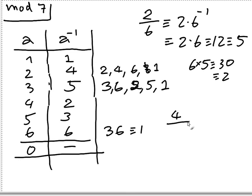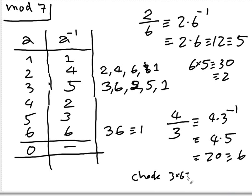Or you can try 4 over 3, that's 4 times the inverse of 3. That's 5, so 4 times 5, that's 20, that's 6. Let's check: 3 times 6, that's 18, that's 4 mod 7.